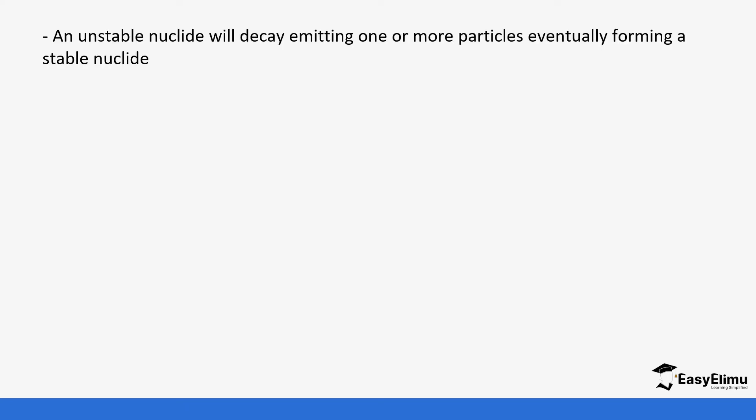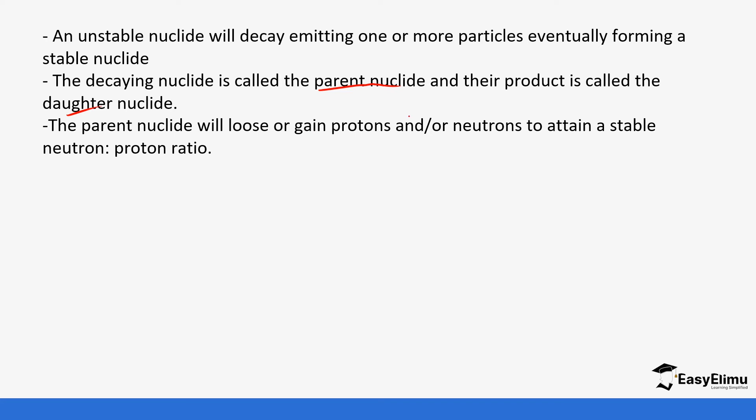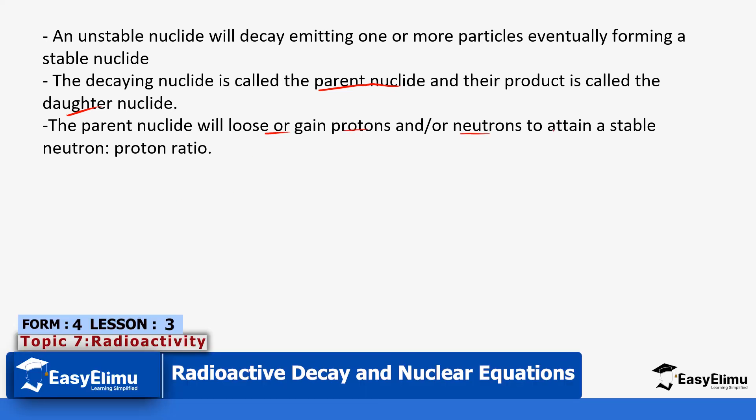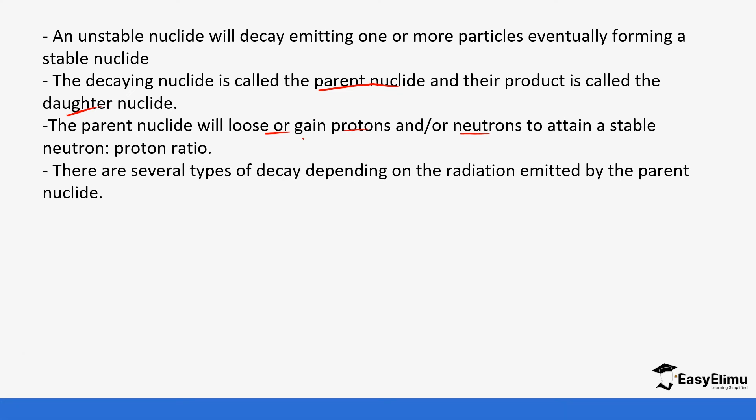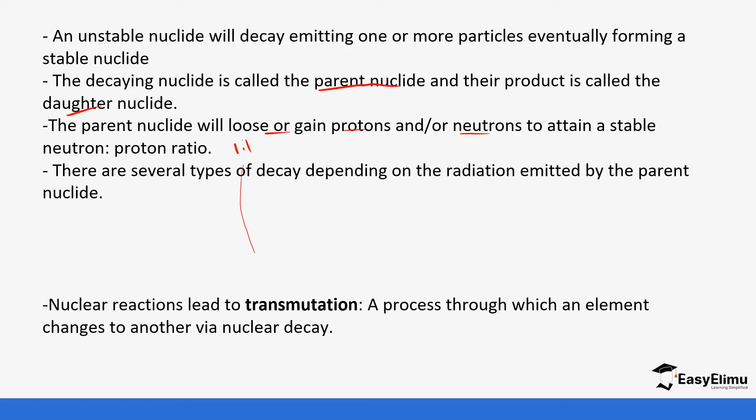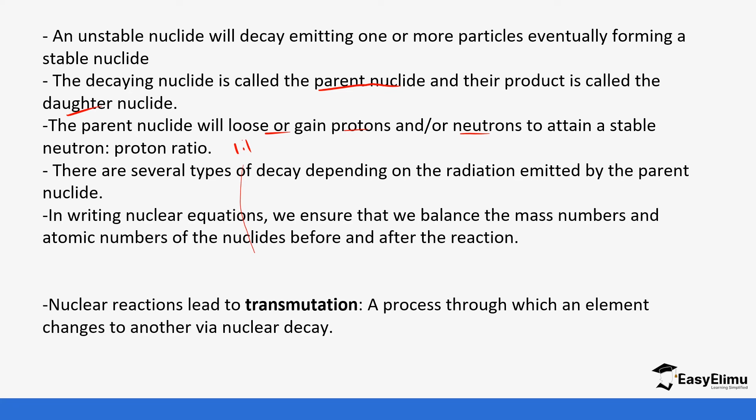An unstable nuclide will decay emitting one or more particles eventually forming a stable nuclide. The decaying nuclide is called the parent nuclide and the product is called the daughter nuclide. The parent nuclide will lose or gain protons or neutrons to attain a stable neutron-proton ratio. The stable one needs to be at least one is to one. There are several types of decay depending on the radiation emitted by the parent nuclide.